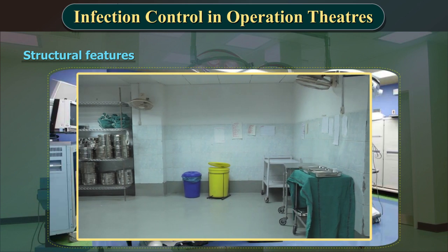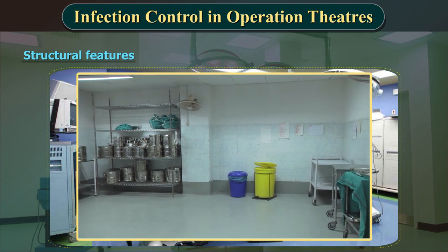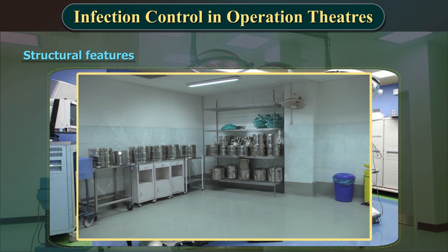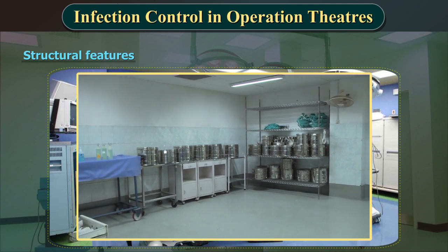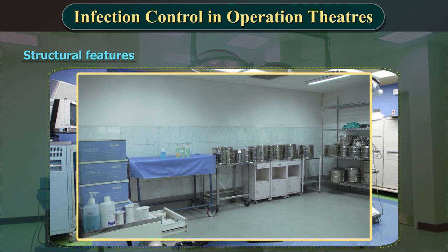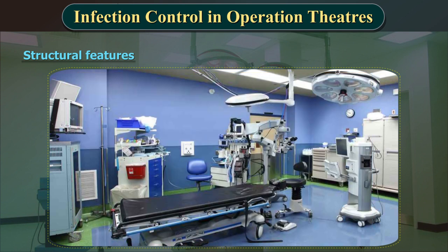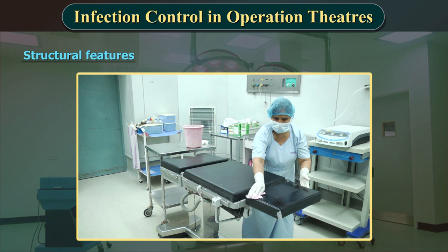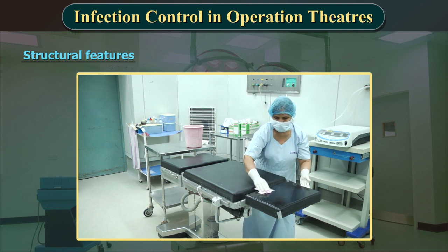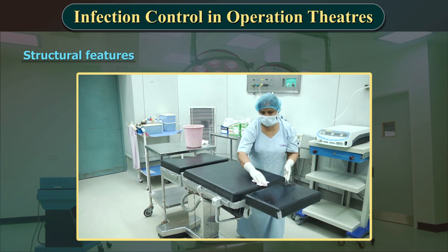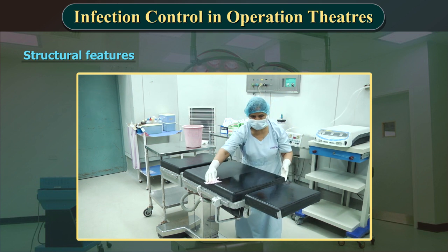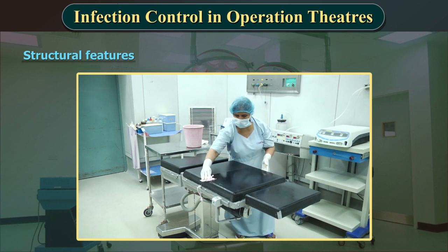The size of storage areas for dirty material, clean material, supplies, instruments, equipment and drugs must be determined in accordance with the type and volume of activity of the operating unit. Moreover, in designing an operating unit, the choice of surface finishes and structural features is of great importance. Surfaces should be easy to clean in order to facilitate infection control.